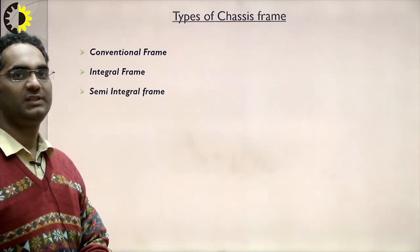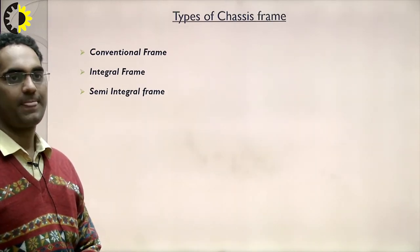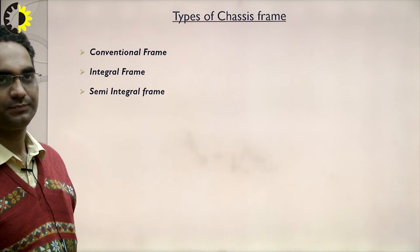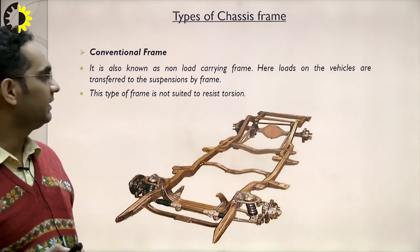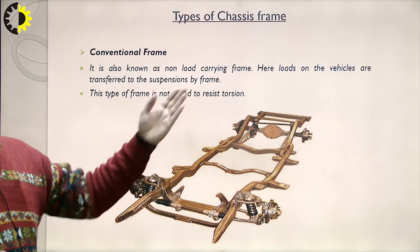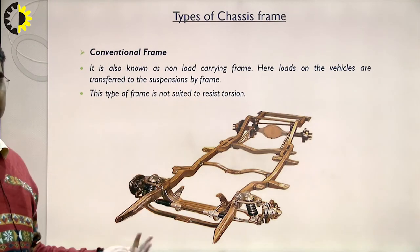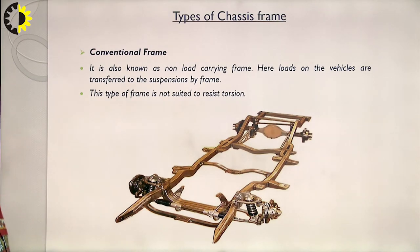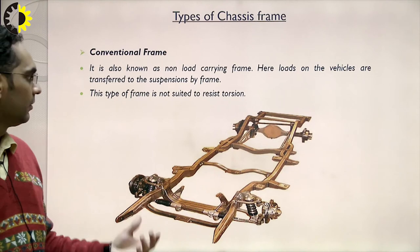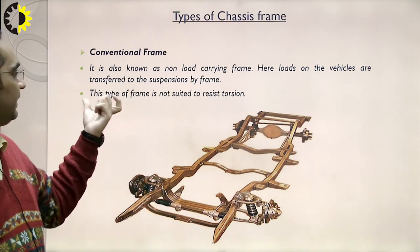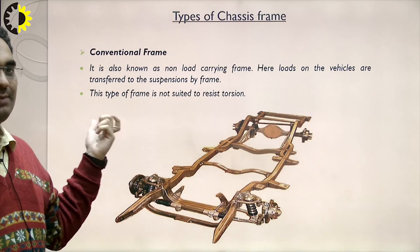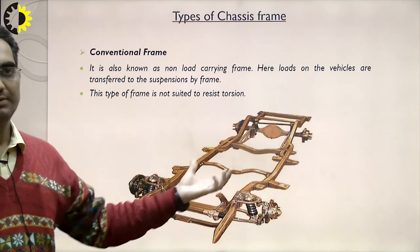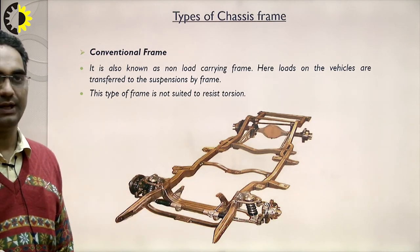Types of chassis frame: conventional frame, integral frame, and semi-integral frame. The conventional frame is also known as the non-load carrying frame. Loads on the vehicle are transferred to the suspensions by the frame. This type of frame is not suited to resist torsion.